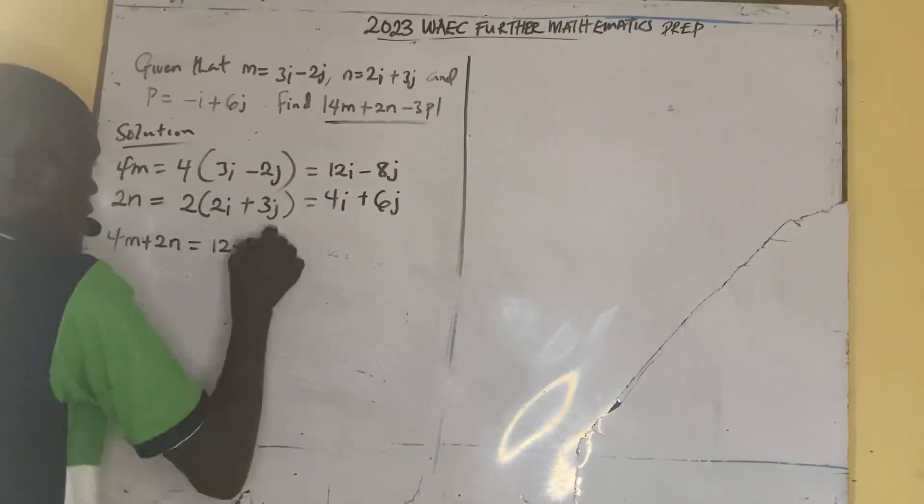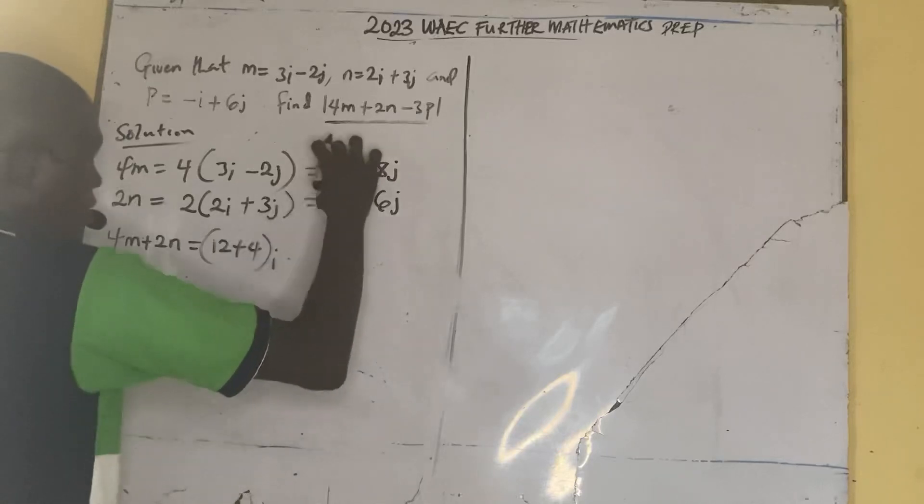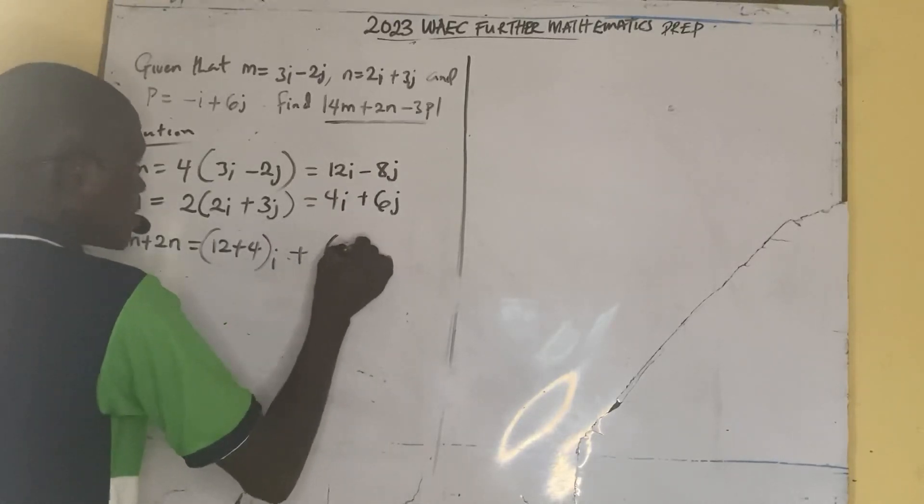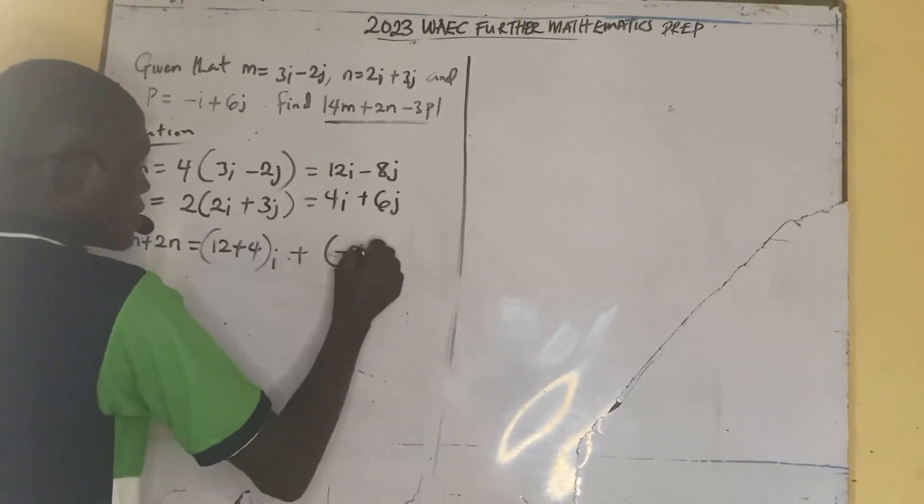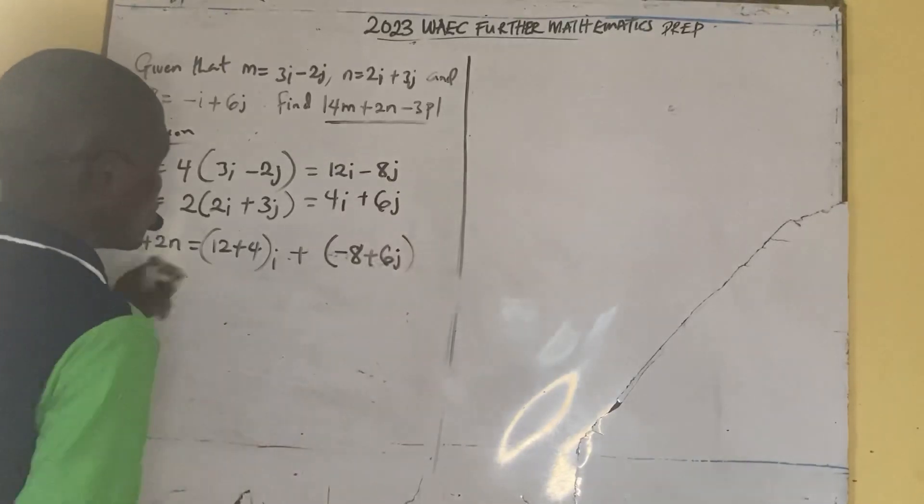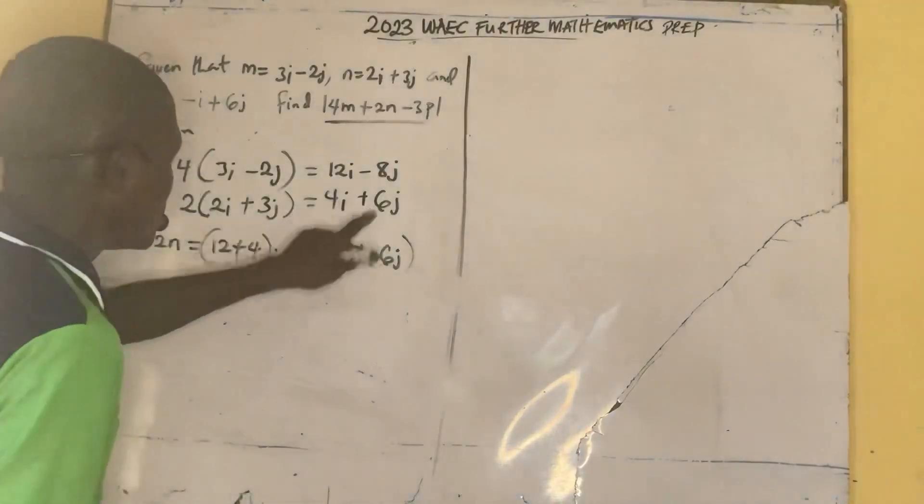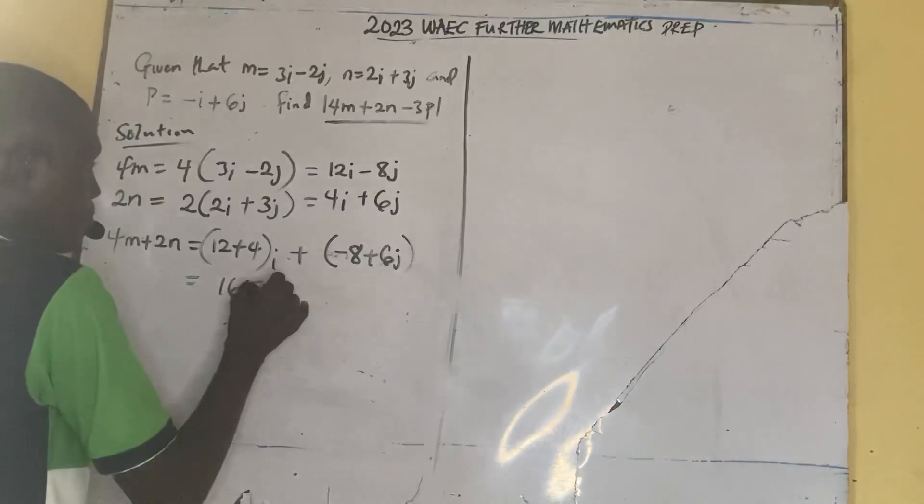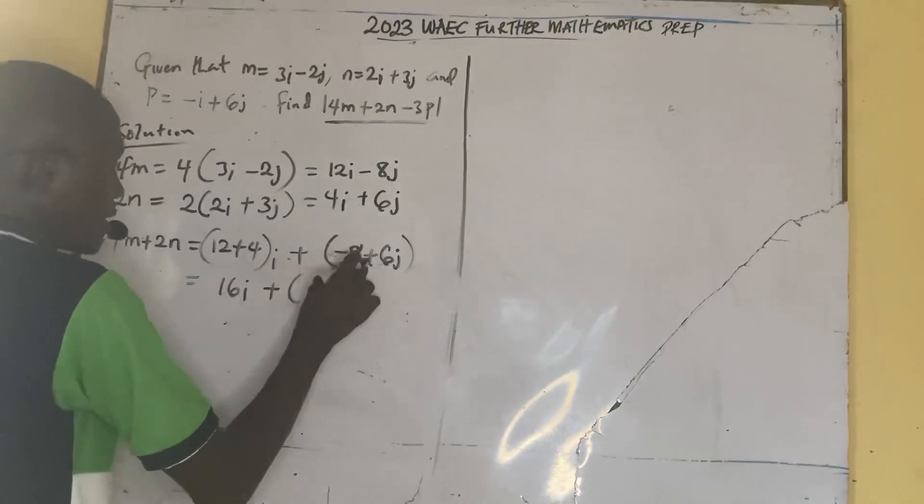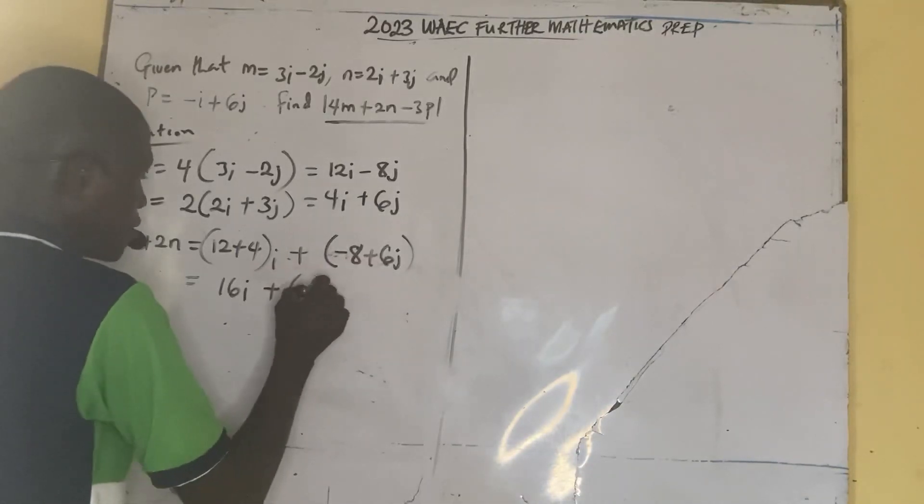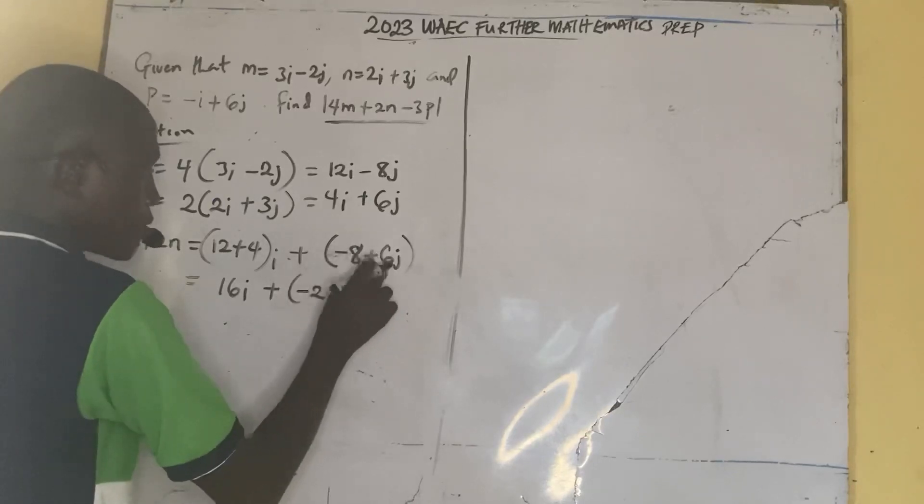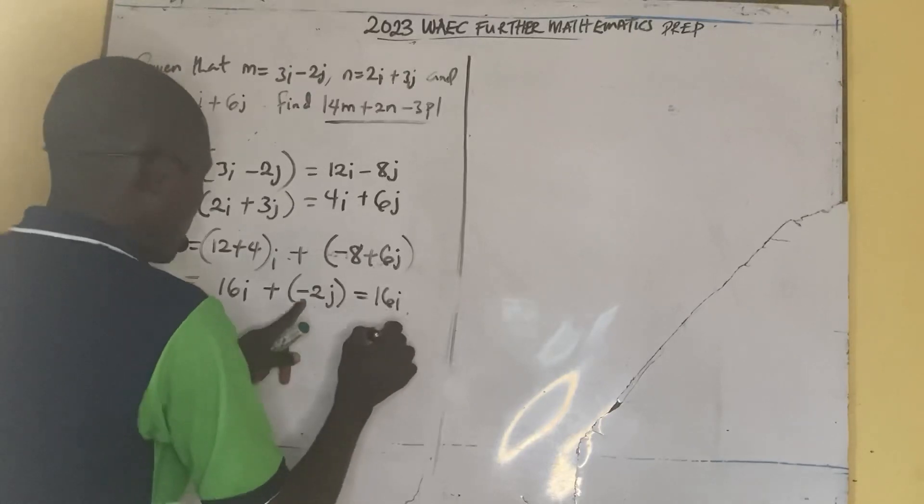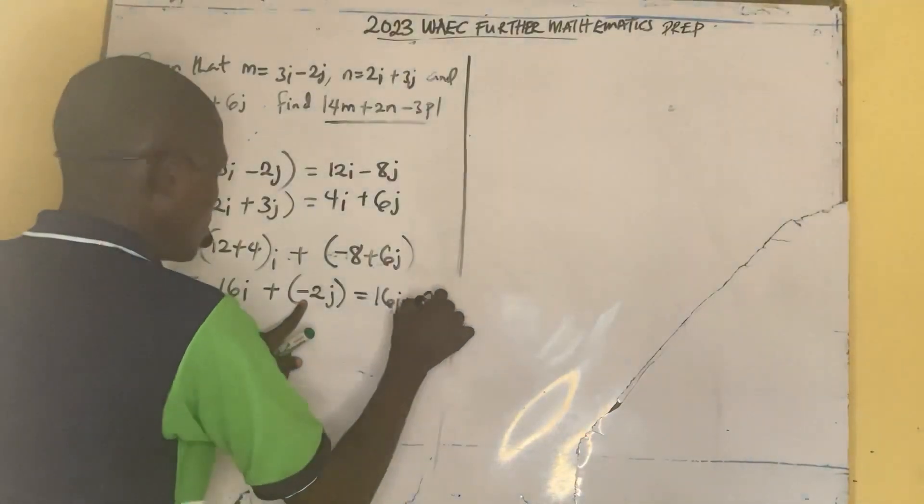We add these two together. 12i plus 4i add them together. Then plus open bracket minus 8 plus 6j, minus 8 plus 6j. So we add, 16i plus into bracket minus 8 plus 6 is minus 2j. Minus 8 plus 6 is minus 2. So everything here would be 16i minus 2j.